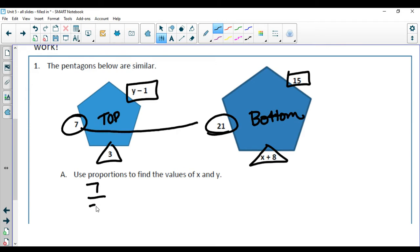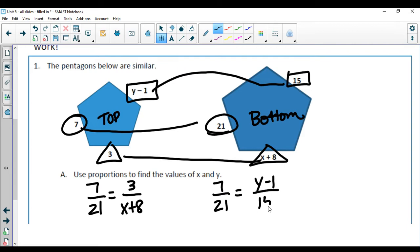I'm going to do 7 over 21 as my starting spot for both of these. I have hiccups, so if I hiccup in the middle of a question, I'm really sorry. For the next one, we have 3 and x plus 8, so I'm going to find x first. 3 over x plus 8. And for the y's, I have y minus 1 over 15.